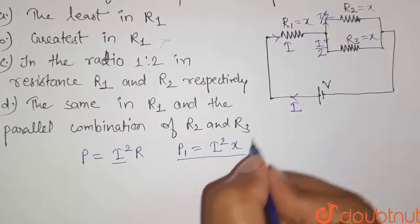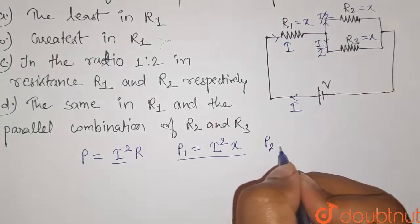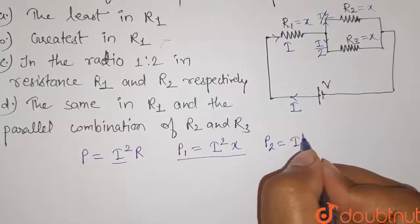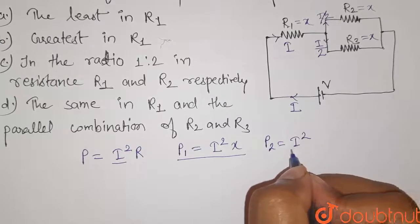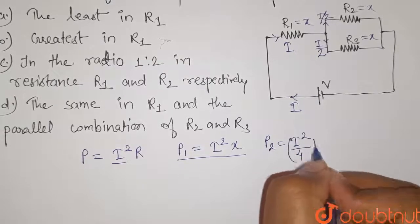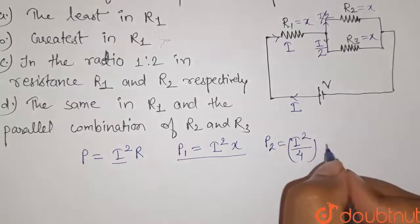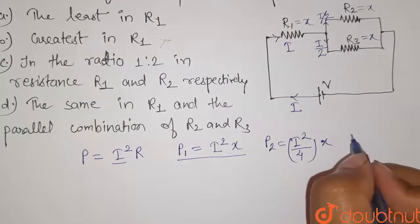Similarly for R2, it will be I squared divided by 4, so this is the square of current into its resistance, so that is X.